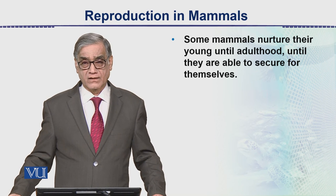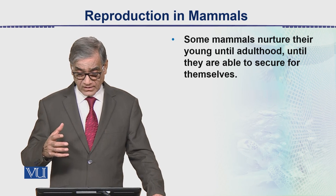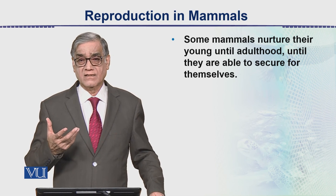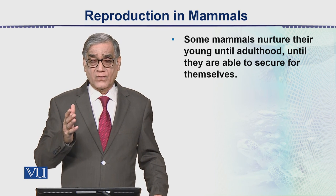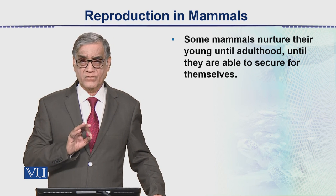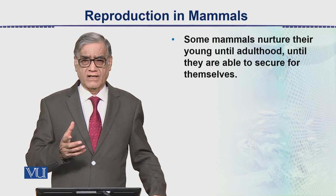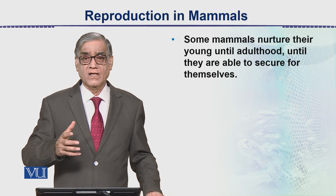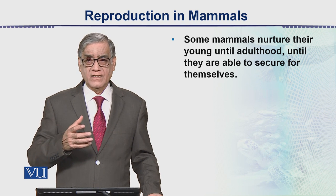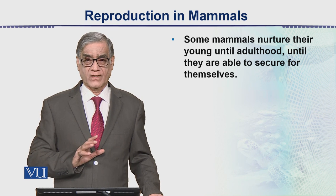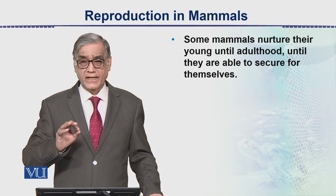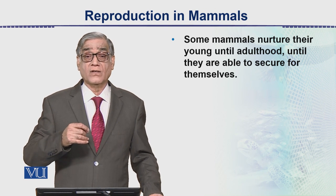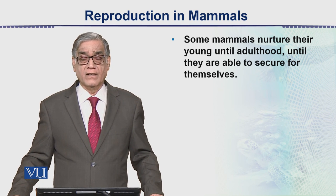Some mammals nurture their young till adulthood. Adulthood is when a person becomes able to reproduce — that is the stage of adolescence. This is often asked in interviews: if asked 'are you an adult?', the correct answer is that it is the natural process — when a person, he or she, is able to reproduce, then we say they have become an adult, or they have entered the stage of adolescence. This is all about reproduction in mammals.